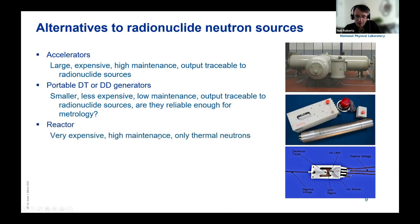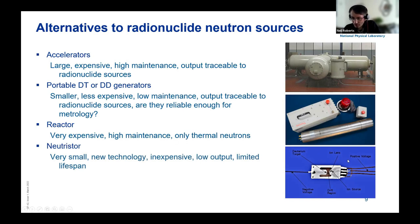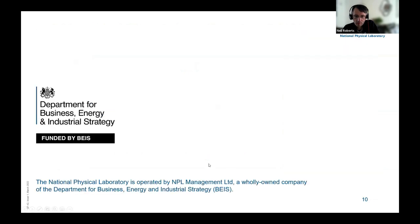We can probably rule out reactors as a broad alternative. There's also a device called a Neutristor, a very small, new, and inexpensive technology that gives quite a low neutron output and probably has a limited lifespan — so perhaps not ideal for metrology. That was the end of my slides. Thank you, Neil. Very useful, and nice to see those alternatives discussed at the end.